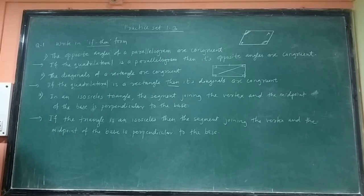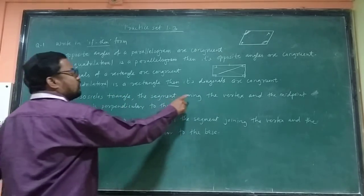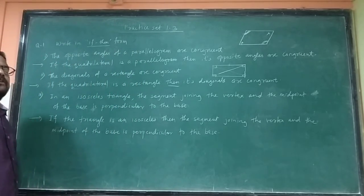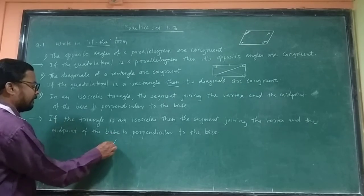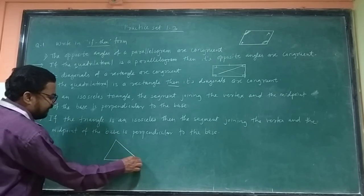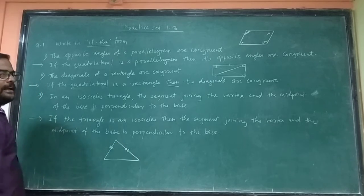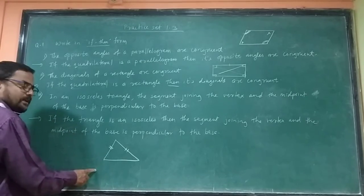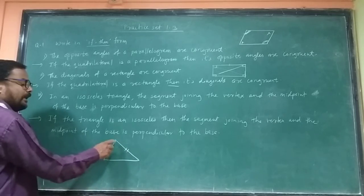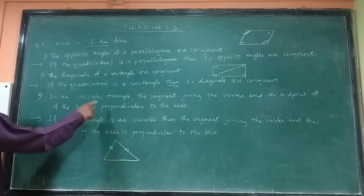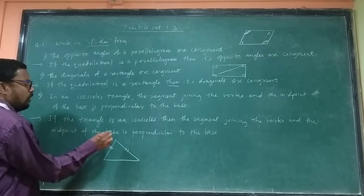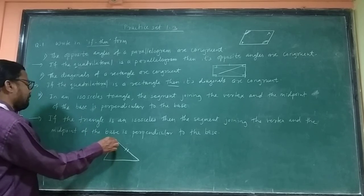In an isosceles triangle, the segment joining the vertex and the midpoint of the base is perpendicular to the base. In an isosceles triangle, this segment joining the vertex and midpoint of the base — what is the joining? The vertex and midpoint of the base.